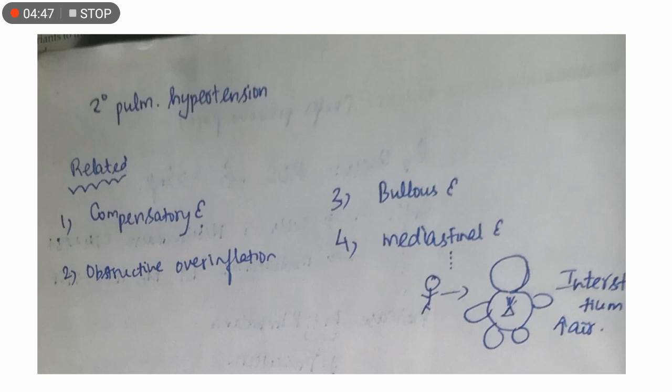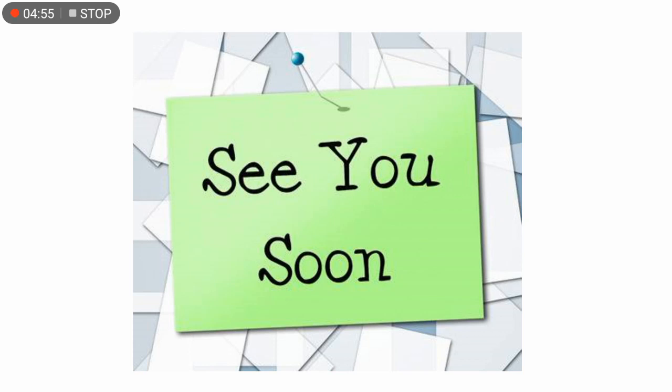Related diseases include compensatory, obstructive overinflation, bullous emphysema, and mediastinal emphysema. In mediastinal type, the interstitium will have air.